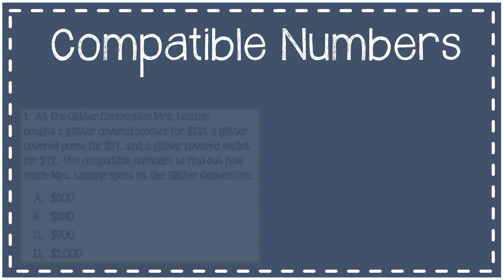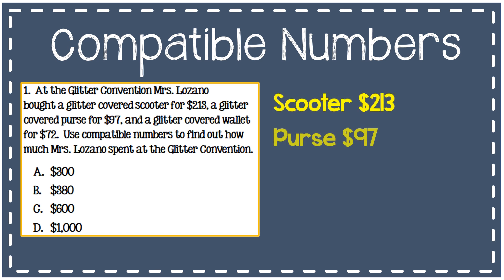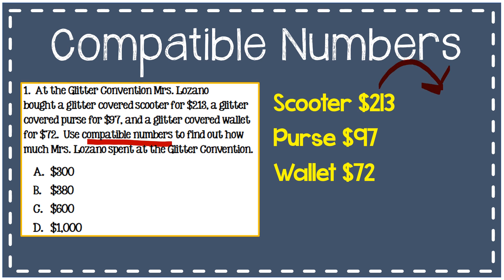Let's look at another example. At the glitter convention, Mrs. Lozano bought a glitter covered scooter for $213, a glitter covered purse for $97, and a glitter covered wallet for $72. Use compatible numbers to find out how much Mrs. Lozano spent at the glitter convention. It's important to know I'm going to round to the nearest ten, and I need to round to the same place for each number.